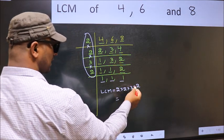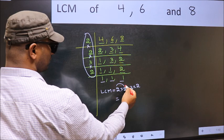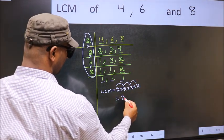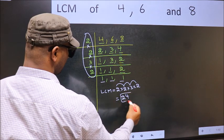Let us multiply these numbers. 2 into 2, 4. Into 3, 12. Into 2, 24. 24 is our LCM.